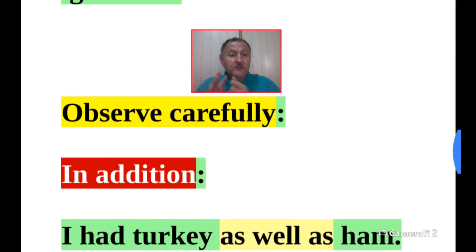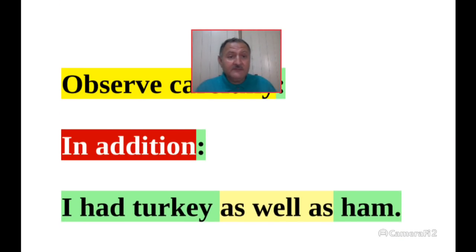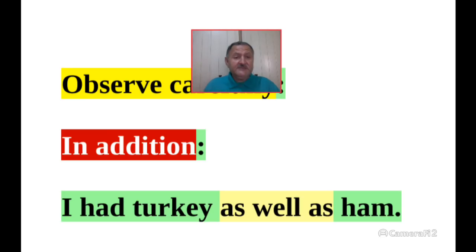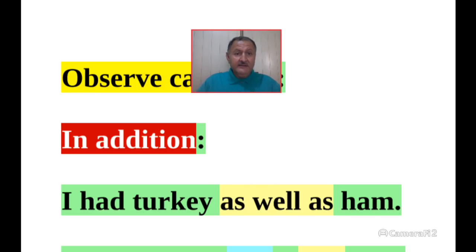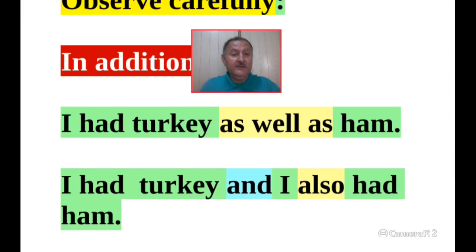So let me explain this in English. When we want to convey addition, we can use the expression 'as well as': I had turkey as well as ham. You can substitute 'as well as' with 'and': I had turkey and ham. But the idea being conveyed is: not only did you have turkey, but you also had ham. I had turkey and I also had ham — so 'also' here means 'además'.